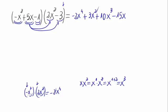Let's go with the third monomial, minus 1. Minus 1 times 2x squared, that is minus 2x squared.